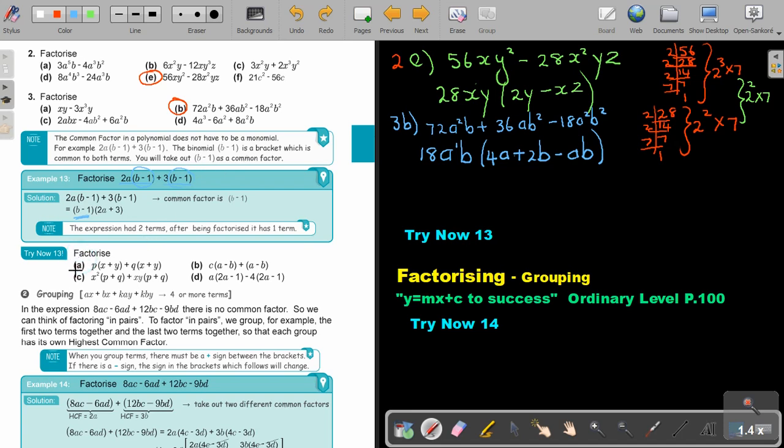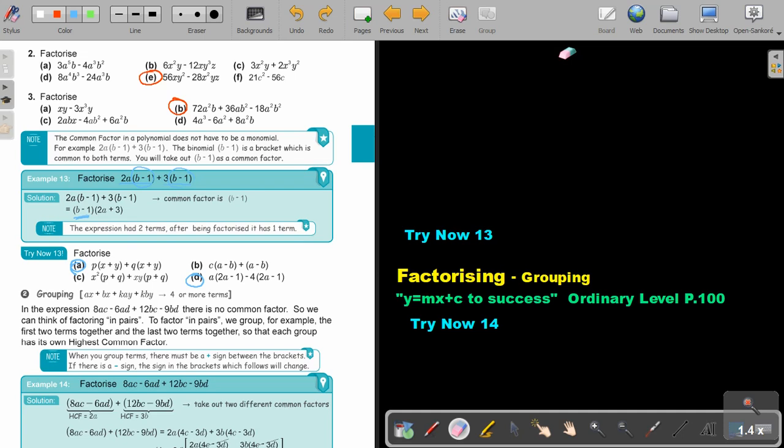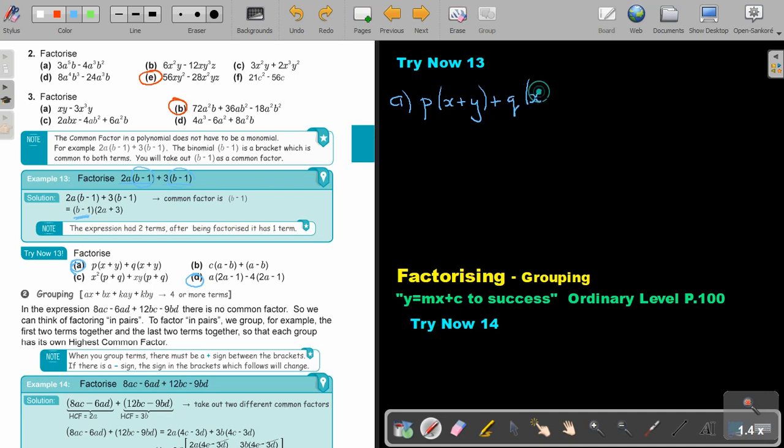I want you to finish this by doing number A and number D. So, if I look at number A. It's going to be P(X plus Y) plus Q(X plus Y). And again, there's two terms. And can you see the brackets? They are exactly the same. So, I'm going to get (X plus Y). And if I divide this cancel, what's left? P. And if I divide this cancel, so what is left? Q.